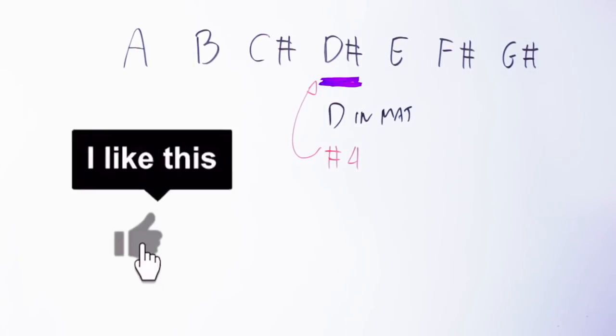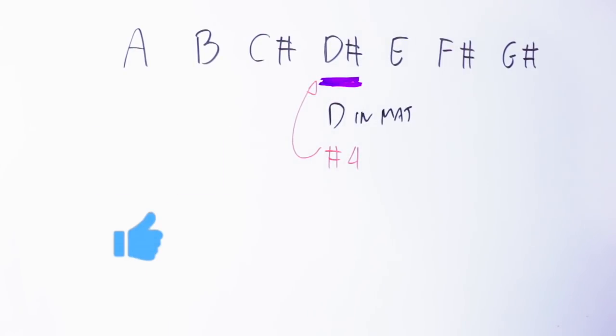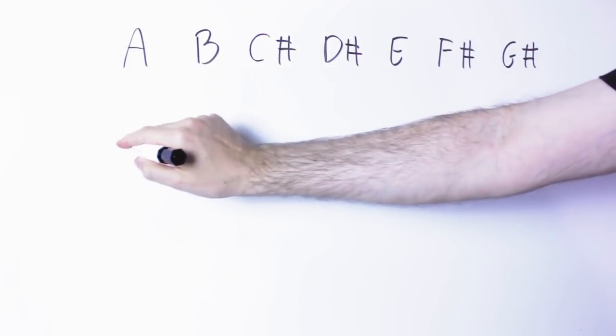As usual, to really hear the sound of a scale it's not enough to just play it, it's best to harmonize it. So let's see what are the triads in this scale. On the first note I can build an A major triad: A, C sharp, E.